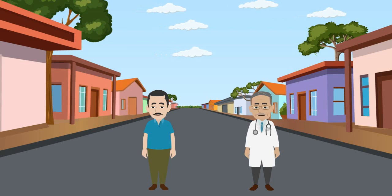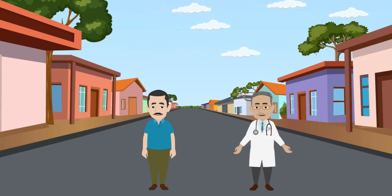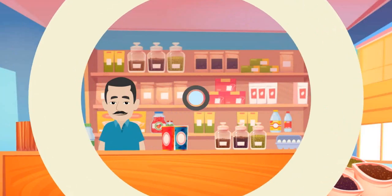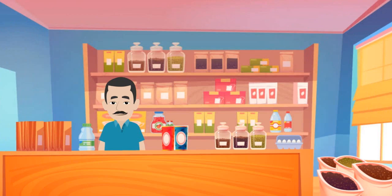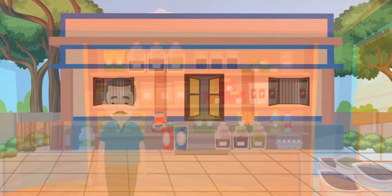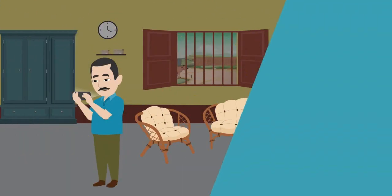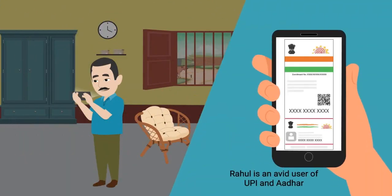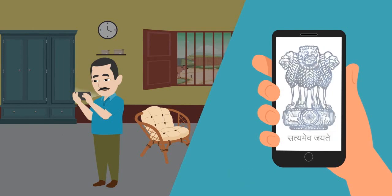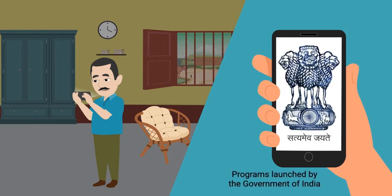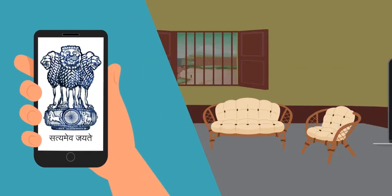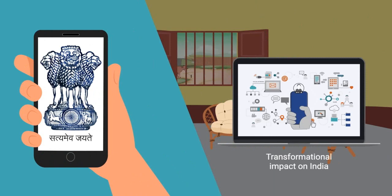Meet Rahul, a young man who lives in Muradabad in India. He runs a grocery store that his father has set up and lives with his wife and parents in their ancestral home. Rahul is an avid user of UPI and Aadhaar, which are large programs launched by the Government of India that have had a transformational impact on India.